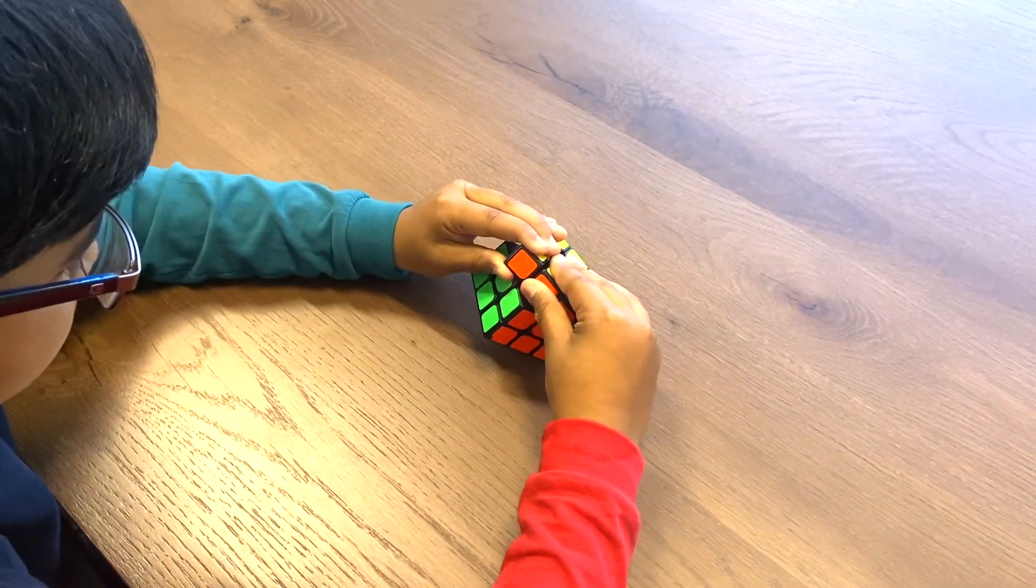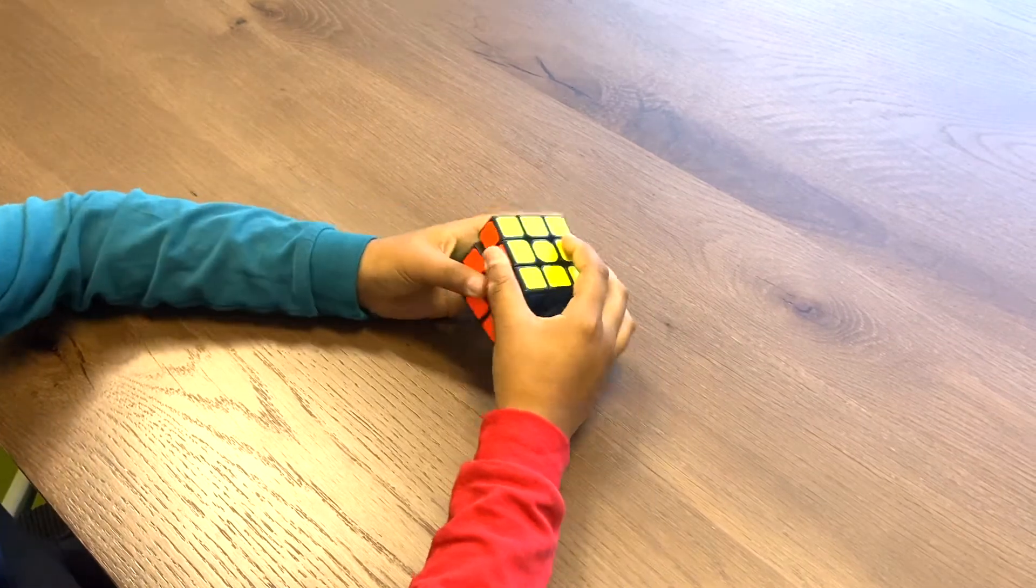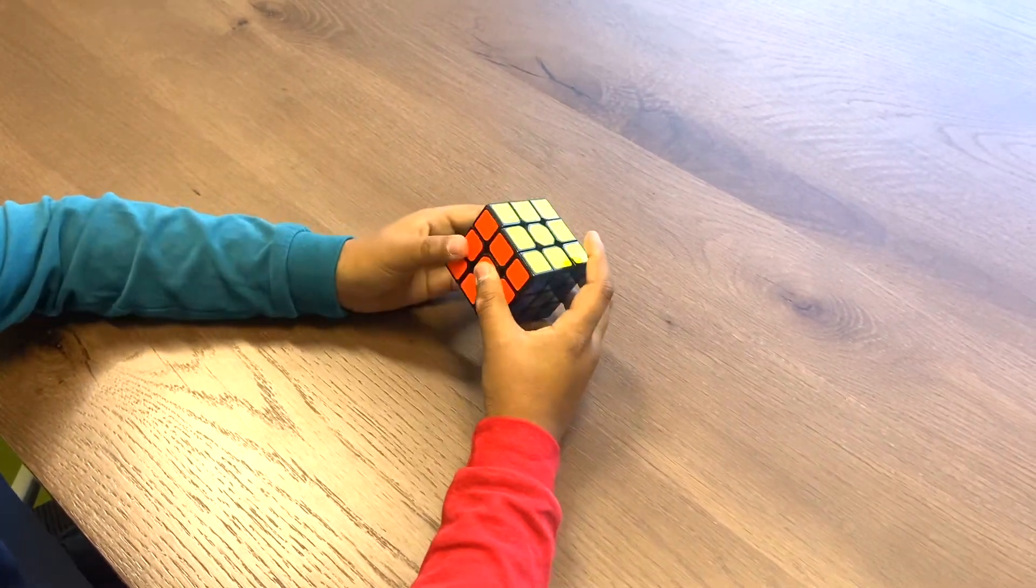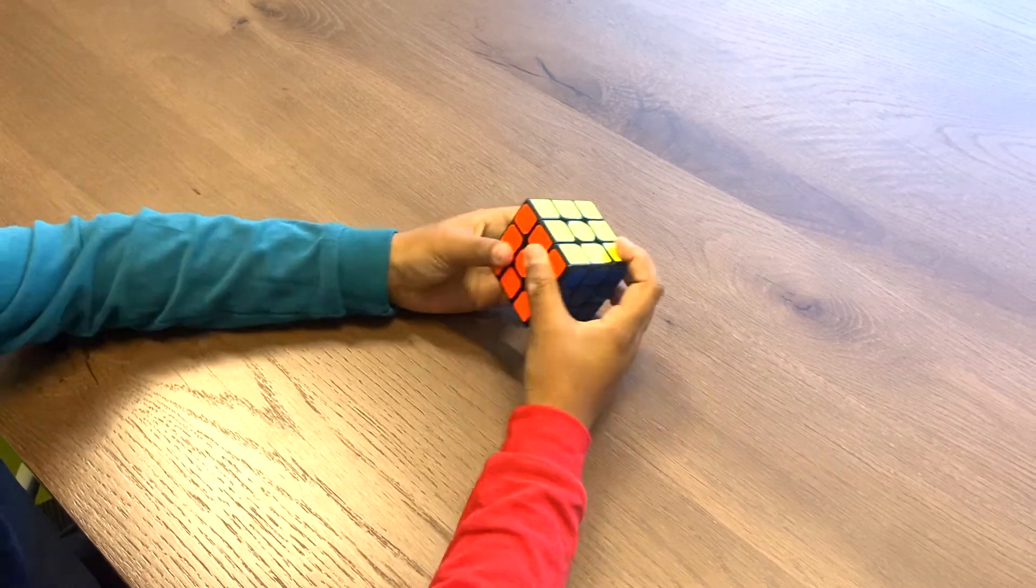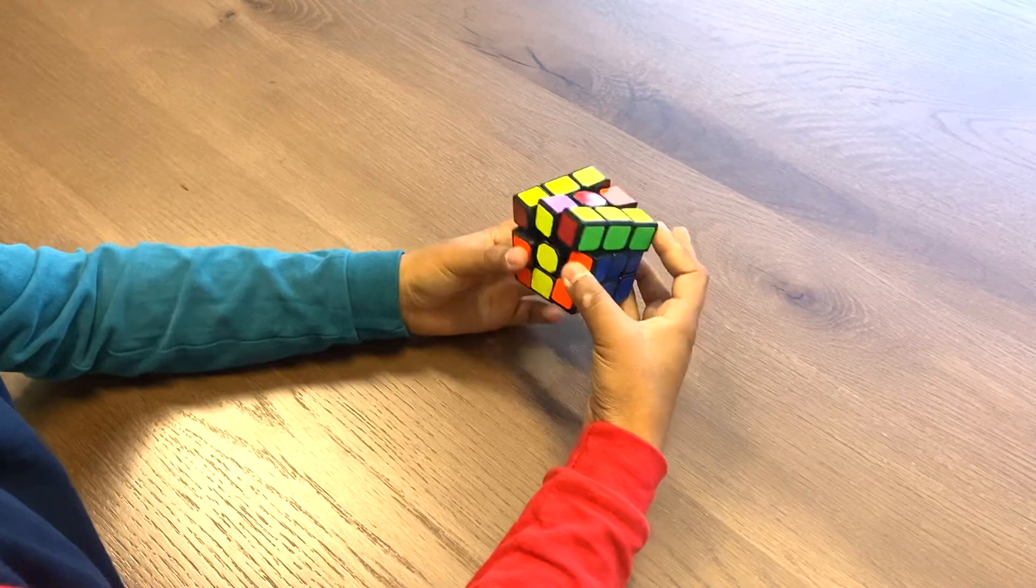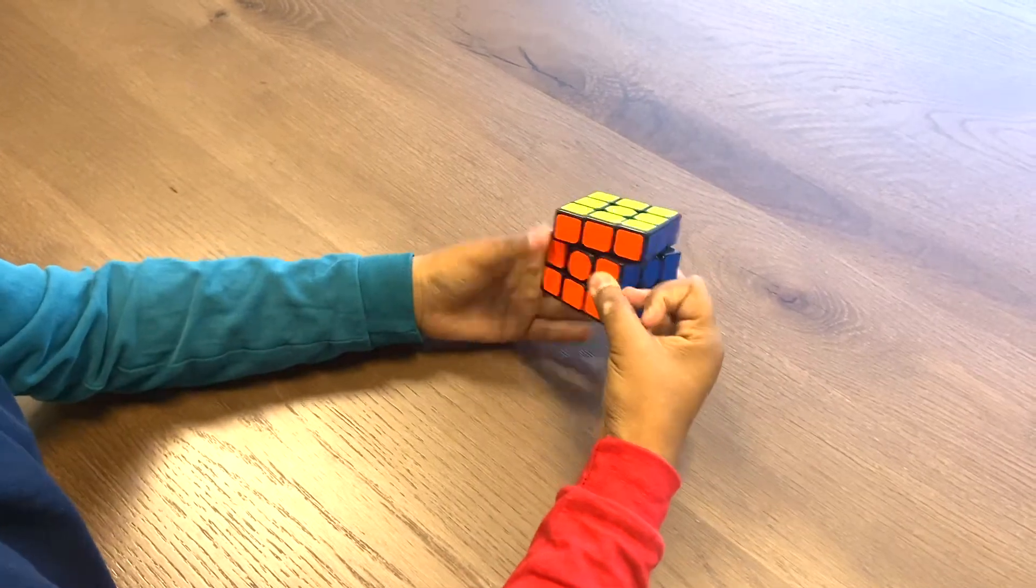Or sometimes R Prime or U Prime or R Prime would work. And now we have a Rubik's cube fully assembled and done.